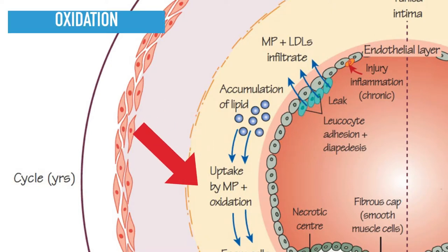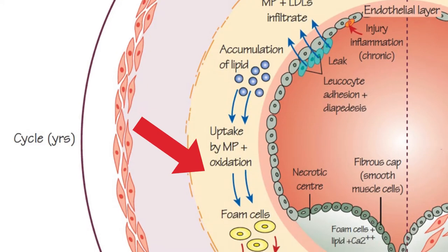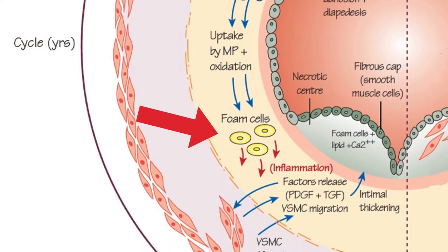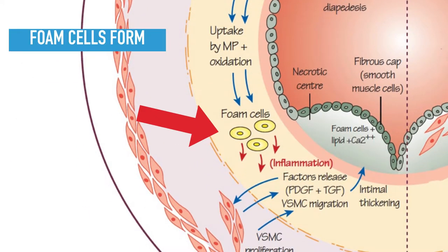The lipoproteins are further oxidized by endothelial cells and later taken up by macrophages via scavenger pathways. This process forms foam cells, which are pathognomonic of atherosclerosis.